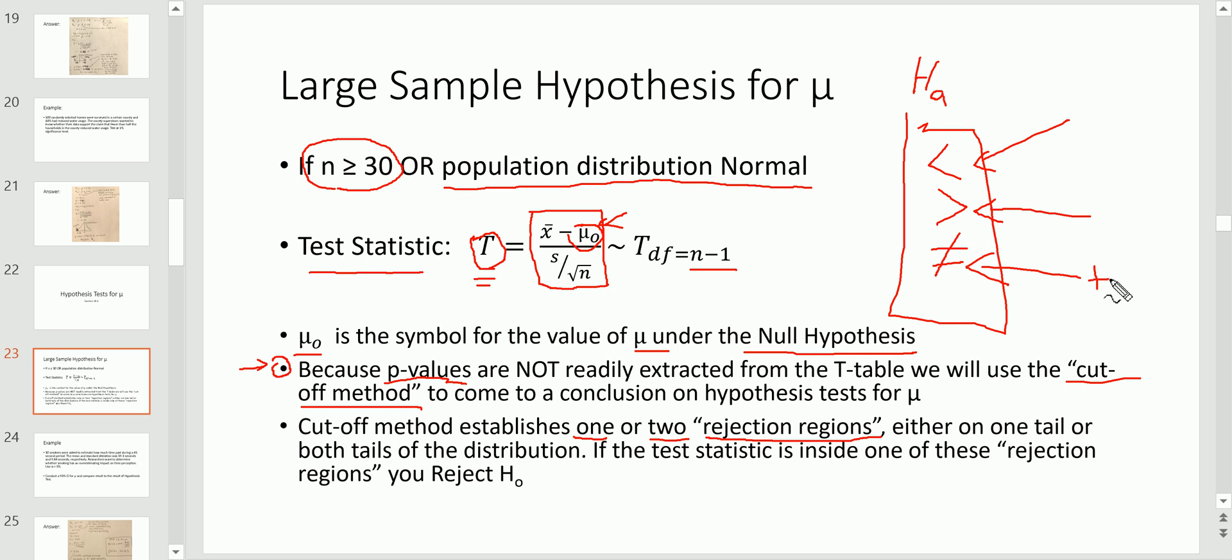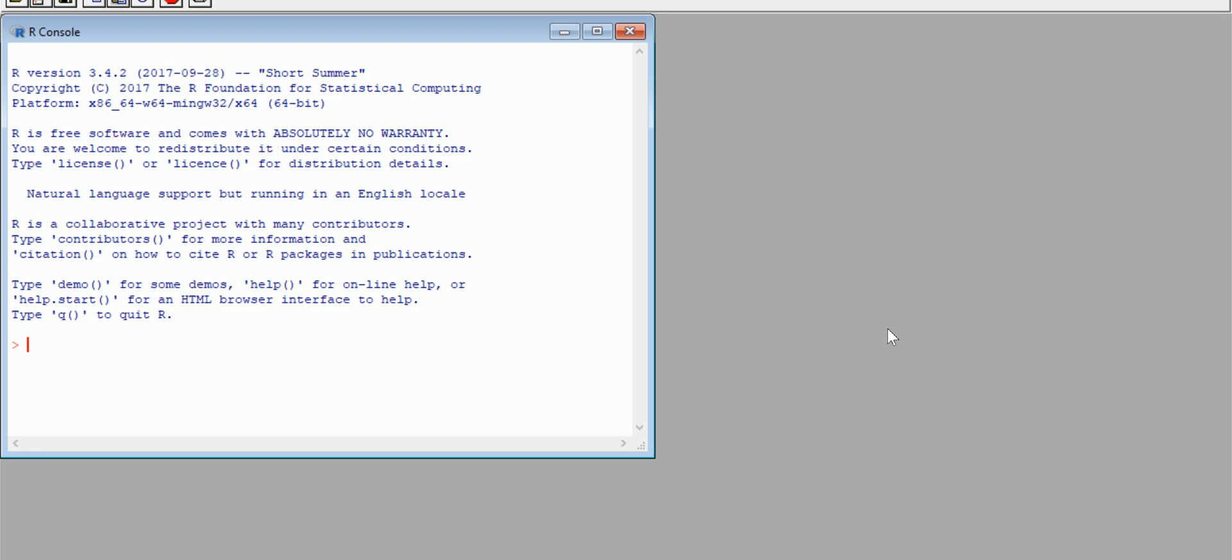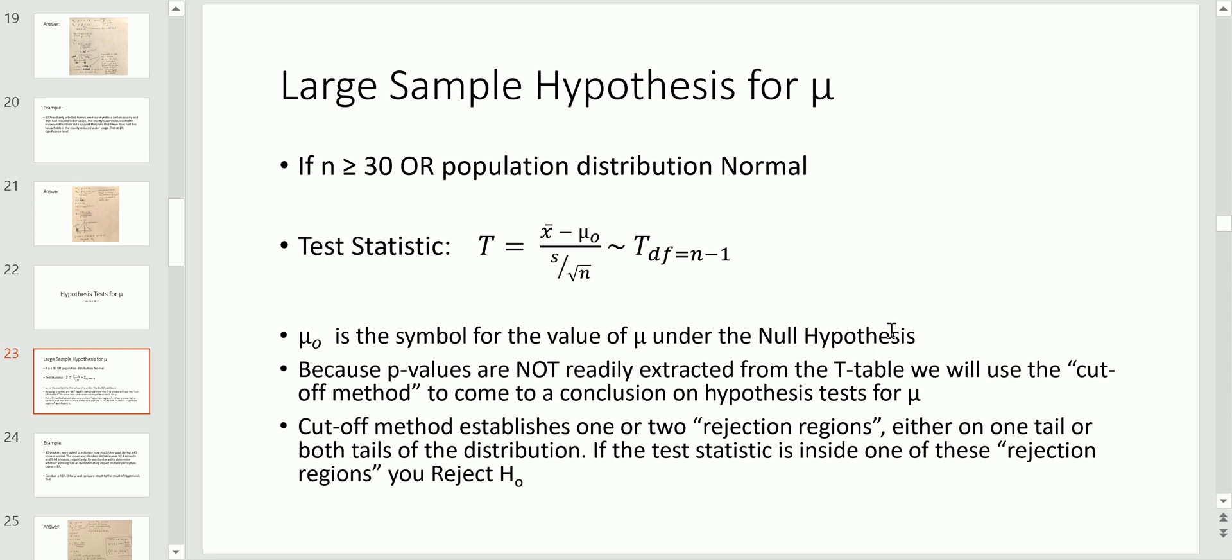You have to be careful which of the two tails that rejection region is going to be on because either way whether it's a one or two tail test, the rejection regions are going to be on the tail of the distribution. Since we're dealing with the t distribution, the distribution looks roughly bell-shaped. You're either going to have a rejection region on this side, this side, or both if you're dealing with this alternative.